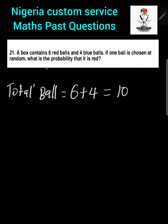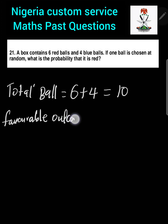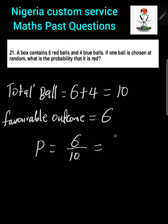The favorable outcome is red, and we have six red balls. So the probability is going to be 6 divided by the total of 10. Six divided by 10 is the same as 3 over 5 when you simplify the fraction, and if the option is given in decimal form, 3 over 5 is the same as 0.6.